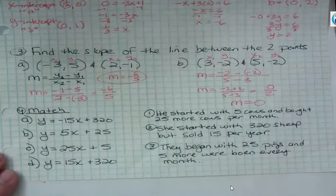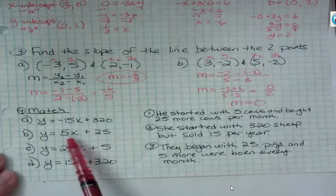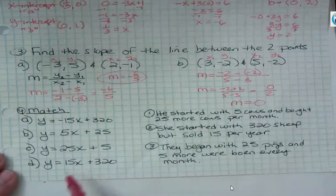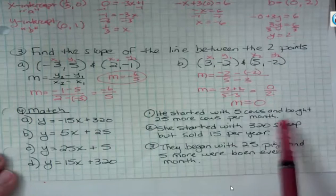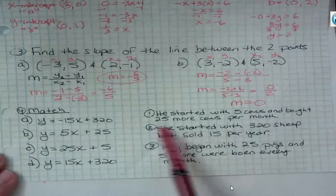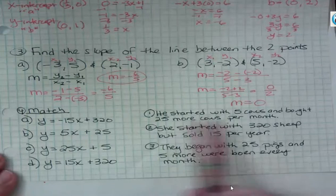So he started with 5 and bought 25 more per month. Our slope, which is next to the x here, the slope is a rate of change. That's something that's changing periodically, monthly or daily or yearly. So what is our slope here? Well, our slope is 25 because that's what's happening.